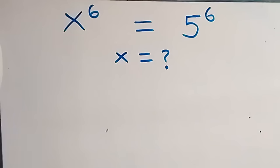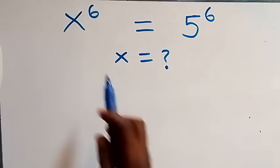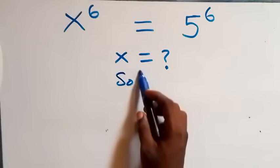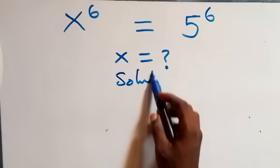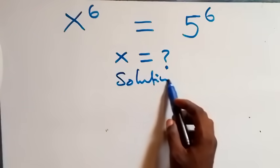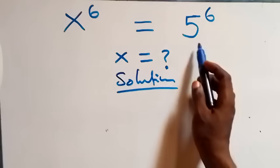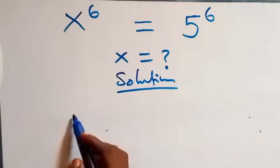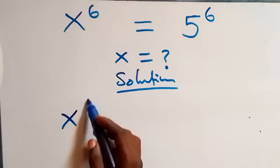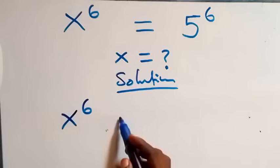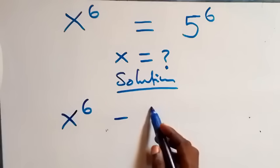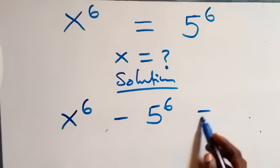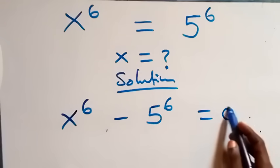Hello, you're welcome. Here we solve a nice exponential equation. We take 5 raised to power 6 to the left-hand side, and what we have becomes x raised to power 6 minus 5 raised to power 6 equals 0.